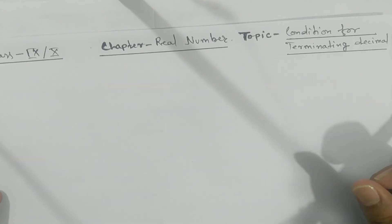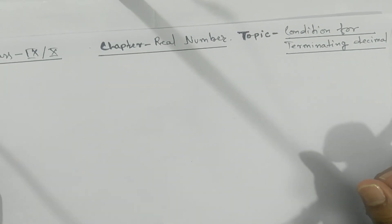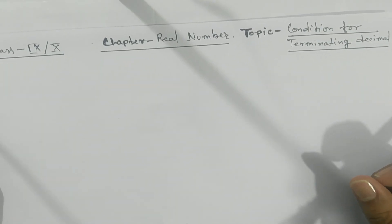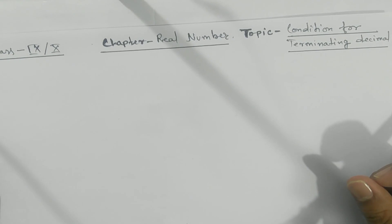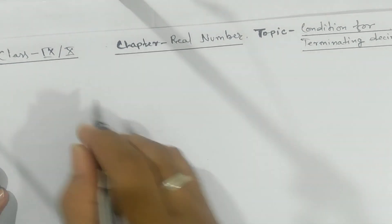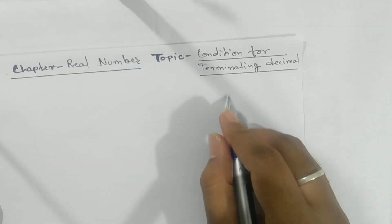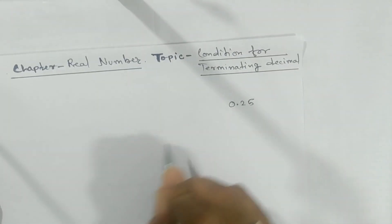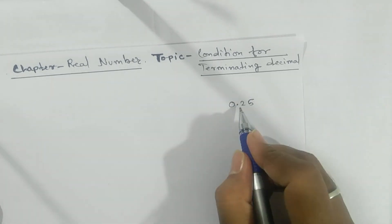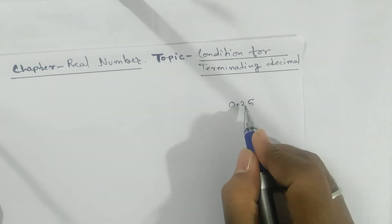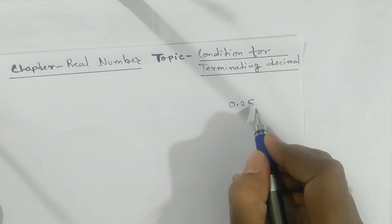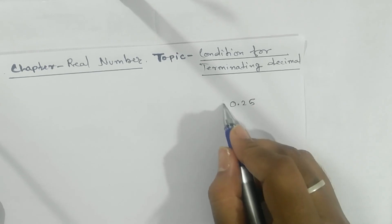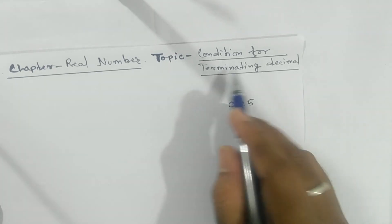Namaste students. Today we're going to learn about the condition for terminating decimals. Let's recapitulate: a terminating decimal means if we take 0.25, look here — after the decimal, if the digits are finite, then that type of decimal expansion is called a terminating decimal.